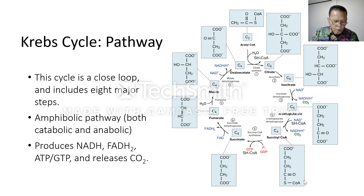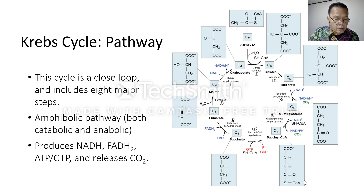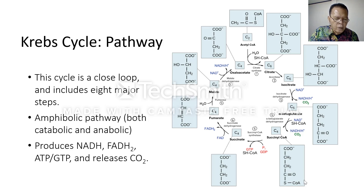Moving to the next step: citrate loses one molecule of water and gains another as citrate is converted into its isomer, isocitrate. In step 3, isocitrate is oxidized, producing a five-carbon molecule alpha-ketoglutarate, together with a molecule of carbon dioxide. The electrons reduce NAD+ to NADH. This step is also regulated by negative feedback from ATP and NADH.